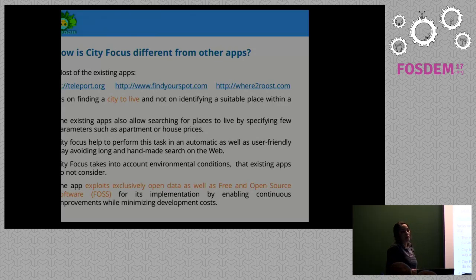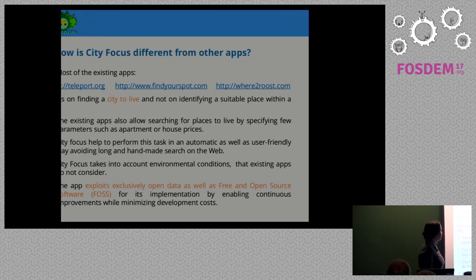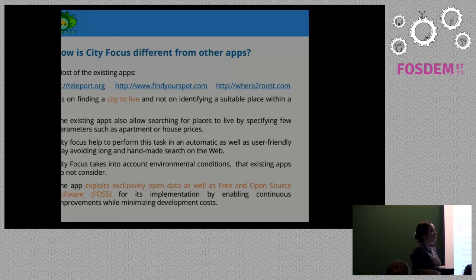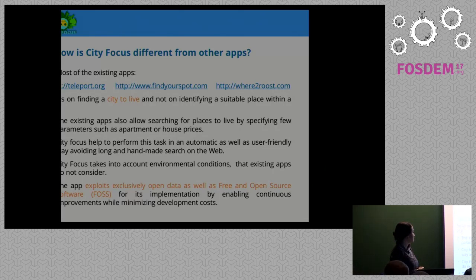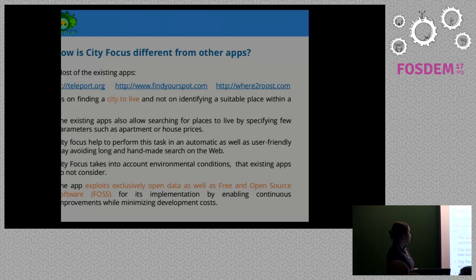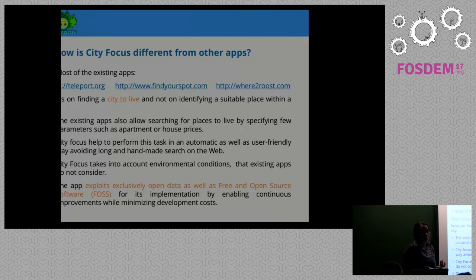How is CityFocus different from other apps? We couldn't find any app that shows you places within a city. The existing apps let you input your income and preferences like temperature or services, and tell you which city in the world to go to — but not within the city. We also tried to make it as user-friendly as possible, avoiding long manual web searches. Normally you don't consider environmental conditions like air pollution or temperature, so we wanted to include those as criteria. And most importantly, we only use open data and open specifications.